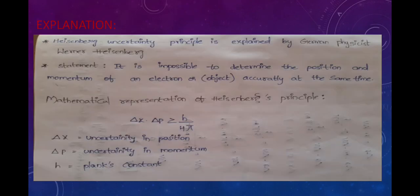The Heisenberg uncertainty principle was explained by German physicist Werner Heisenberg. It states that it is impossible to determine the position and momentum of an electron simultaneously at the same time.